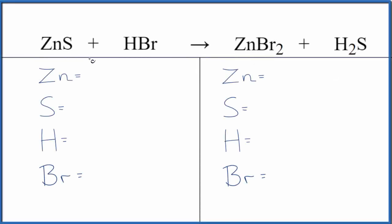Let's balance the equation for ZnS plus HBr. We have zinc sulfide and hydrobromic acid. We'll also take a look at the type of reaction.